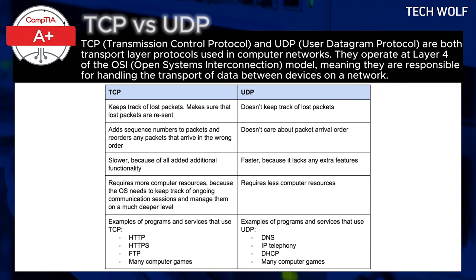For example, TCP port 80 is often used for HTTP, or Hypertext Transfer Protocol, web traffic, and UDP port 53 is used for DNS, or Domain Name System, queries. However, other ports may be used by custom applications or services, depending on the needs of the network.